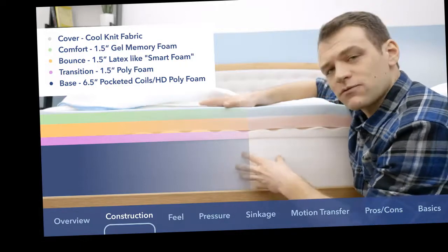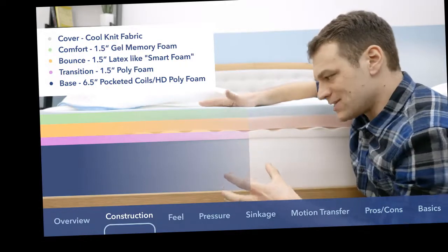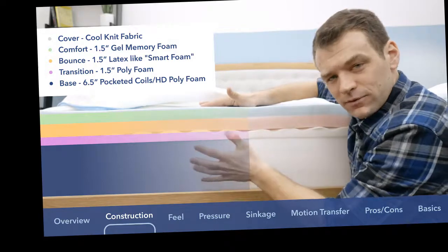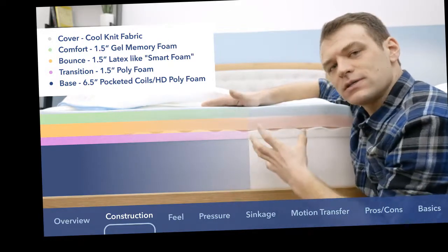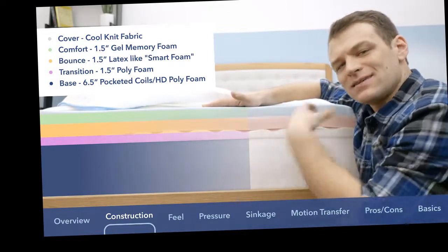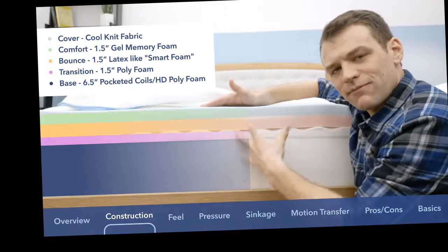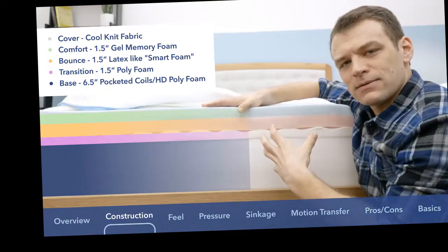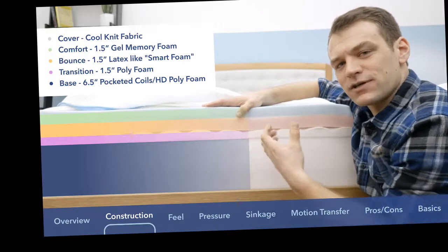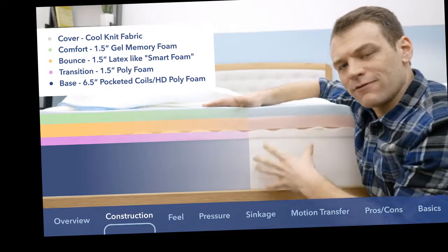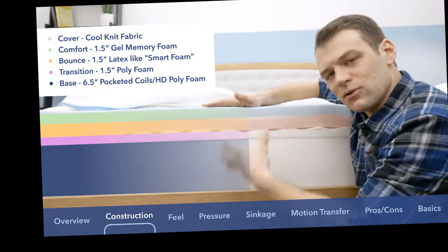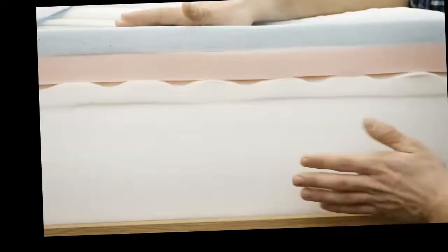The support of the mattress mostly comes from a pocketed coil system, which is hidden behind high-density polyfoam. The pocketed coil support system gives this mattress some bounce and a bit more mobility. With a really soft mattress like this one, people often complain about feeling stuck, so when you're changing positions, it takes more effort. The pocketed coil system gives more bounce and allows you to change positions more easily.